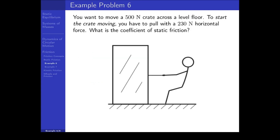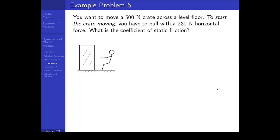Let's look at an example. You want to move a 500 newton crate across a level floor. To start the crate moving, you have to pull with a 230 newton force horizontally. What is the coefficient of static friction between the block and the surface? To do this, let's draw a free body diagram: there's the weight, the normal force, the pulling force, and the opposing friction force. It's specifically maximum static friction opposing the motion, because this is the force applied to get the crate to just start moving — we are at the threshold when the block is just about to start moving, with no acceleration yet.